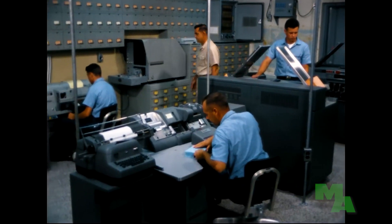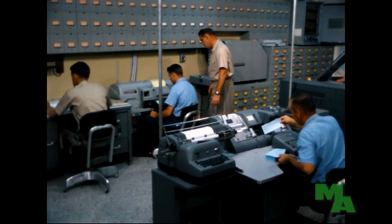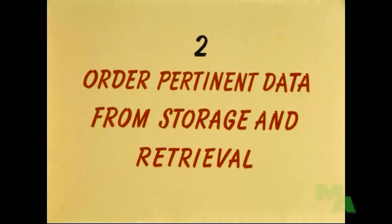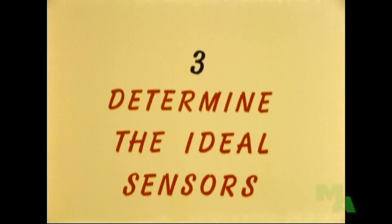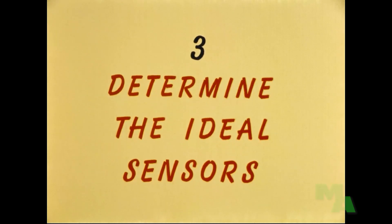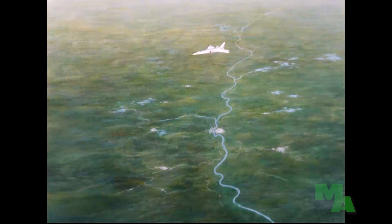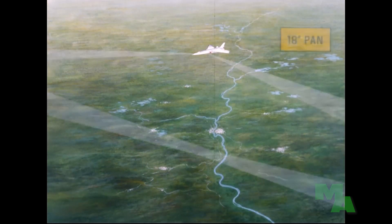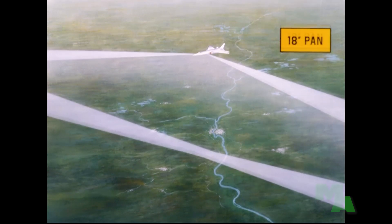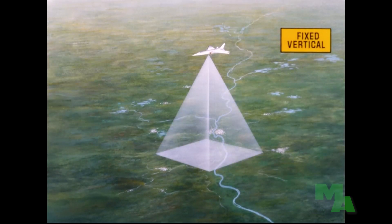Everything in storage and retrieval that would be of value in planning the mission should be requested. The purpose of S&R is to store a vast amount of information that can be retrieved quickly, and its service should be used to the fullest extent. The third principle of mission planning is to determine the sensors that would best serve the purpose. For the high-altitude flight in depth, the 18-inch pan camera would certainly be desirable, and the fixed vertical camera would be effective also.